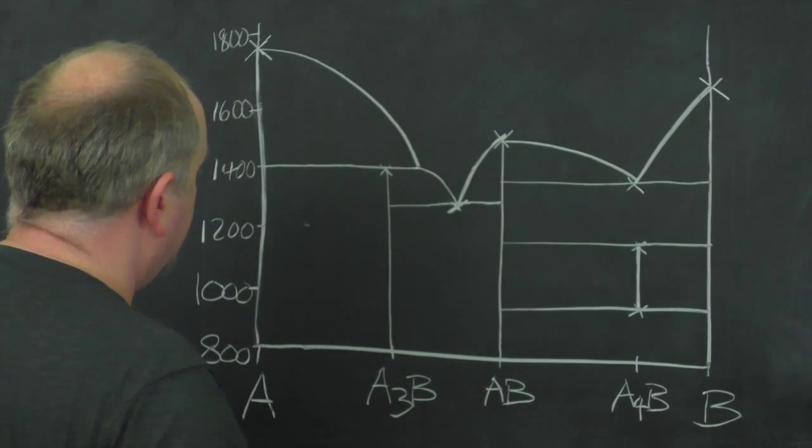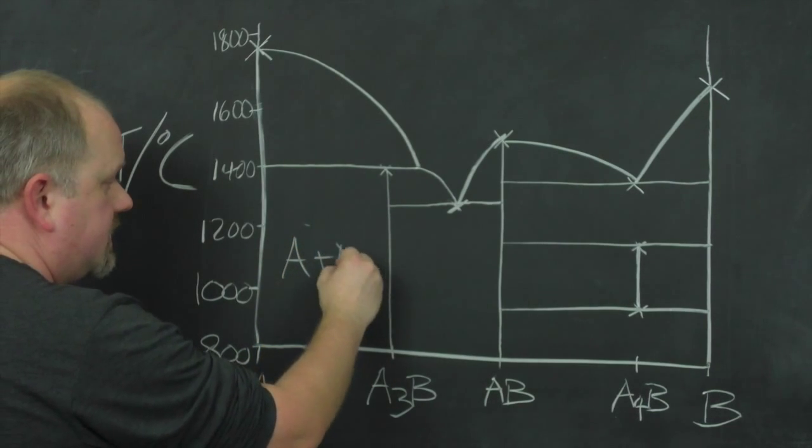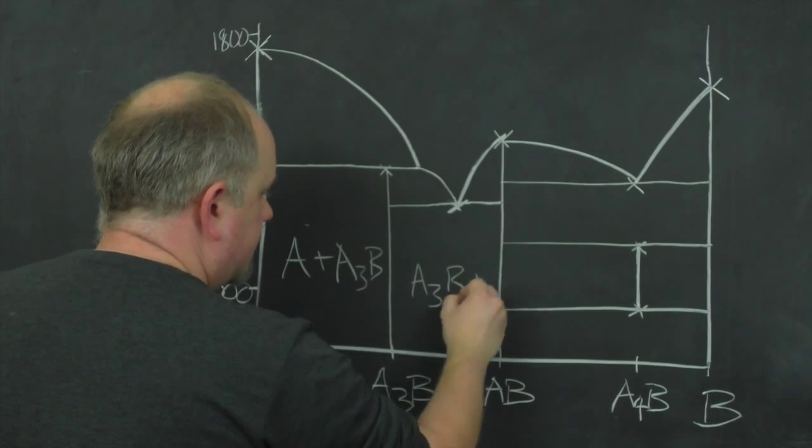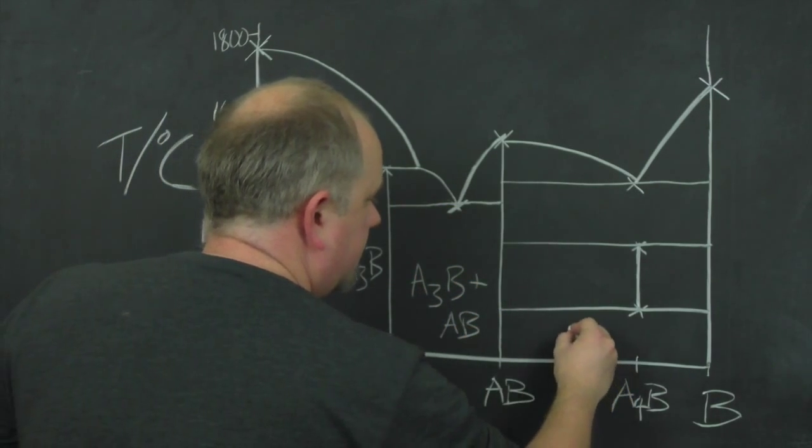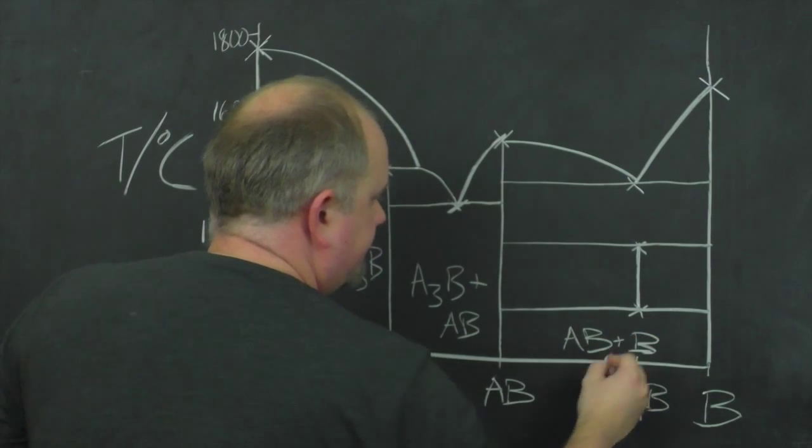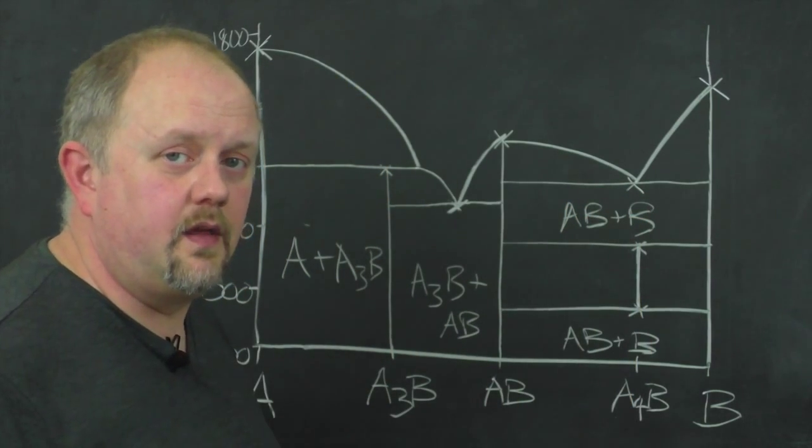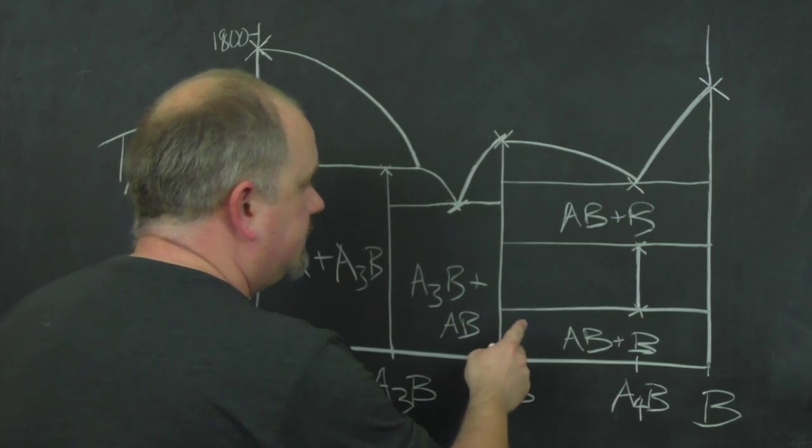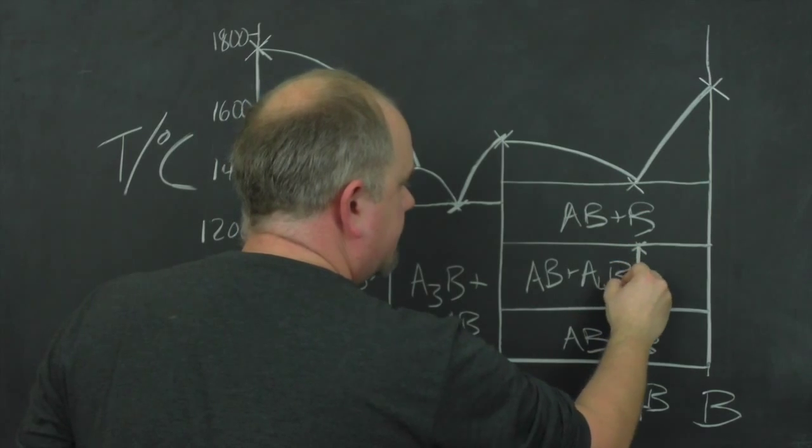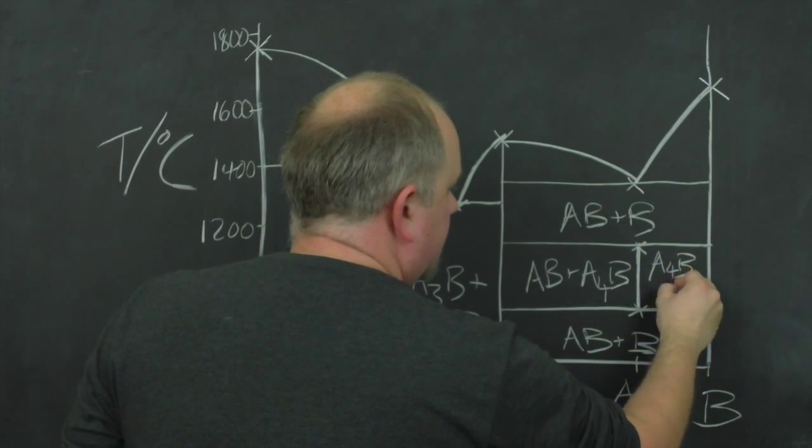And then we can just go through and label up some of these regions. So in here we have A plus A3B, A3B plus AB, AB plus B. And in here we have AB plus B. That's the part that often catches people out. Down here we have AB plus AB4. And in this little region here AB4 plus B.